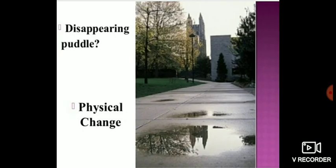We have discussed various examples of physical change. After discussing all these examples, what we have concluded is that physical change is a kind of change in which no new substance formation takes place. You are only changing its state, shape, volume, or size. There is no new substance formation, and chemical properties remain the same. Thank you.